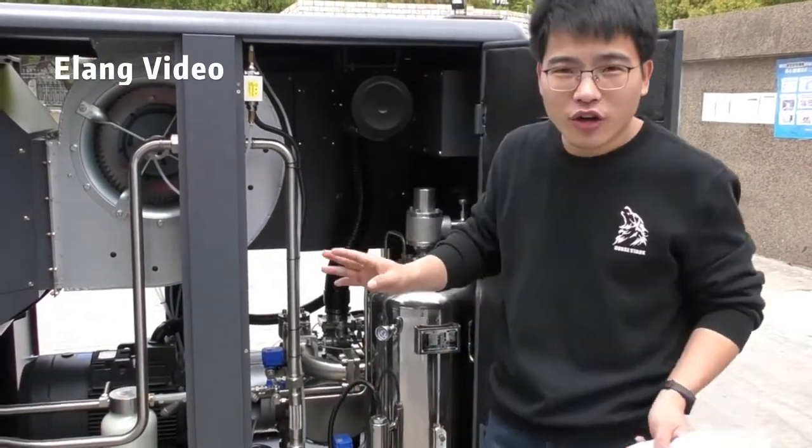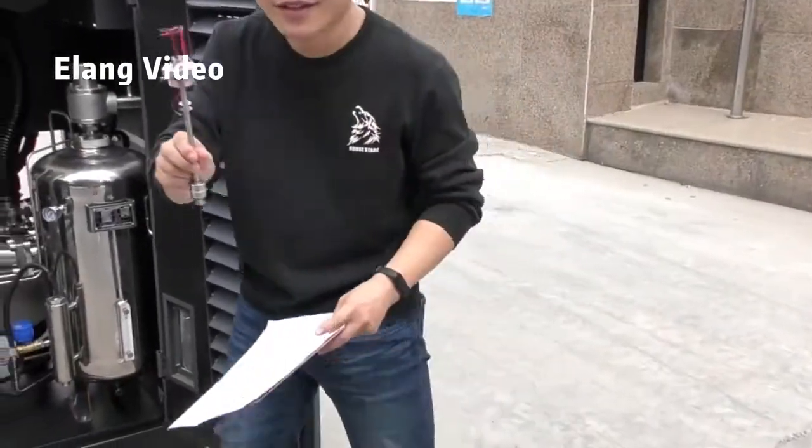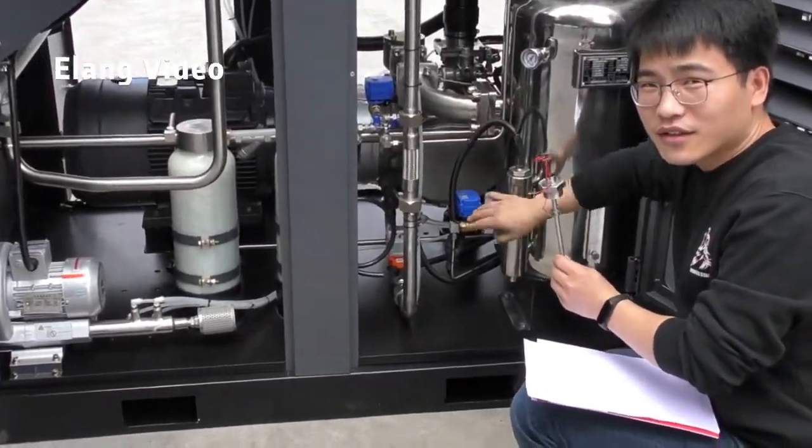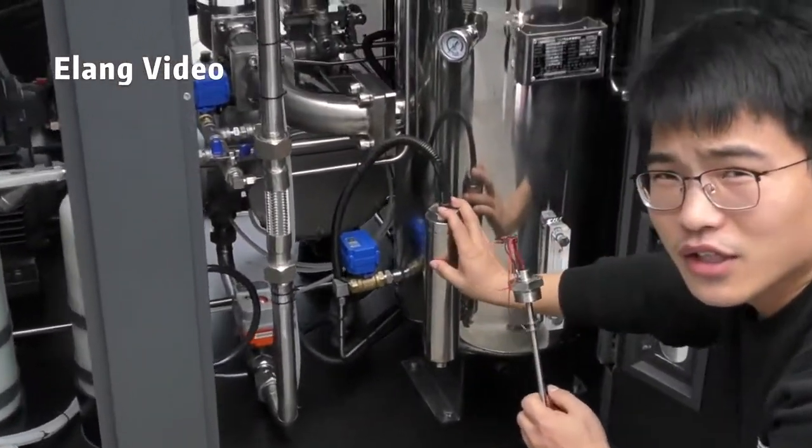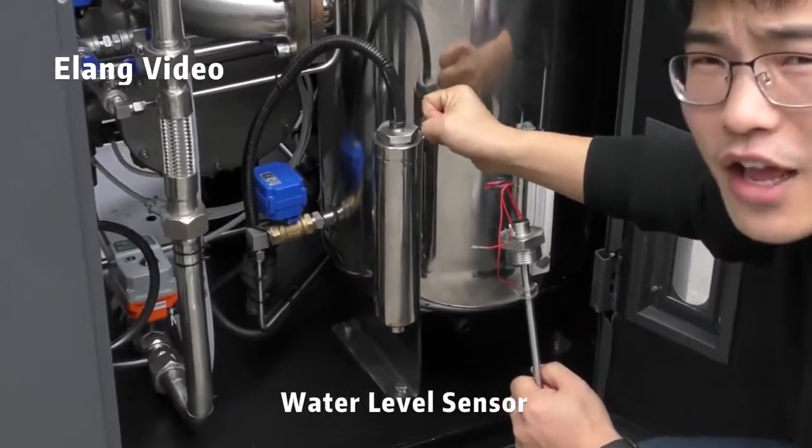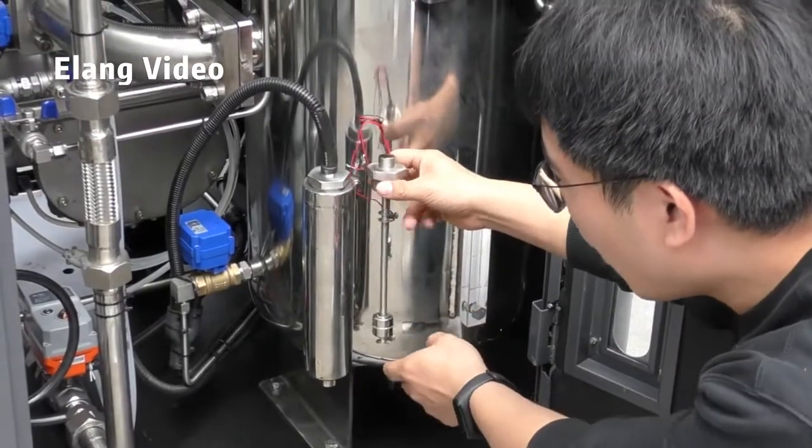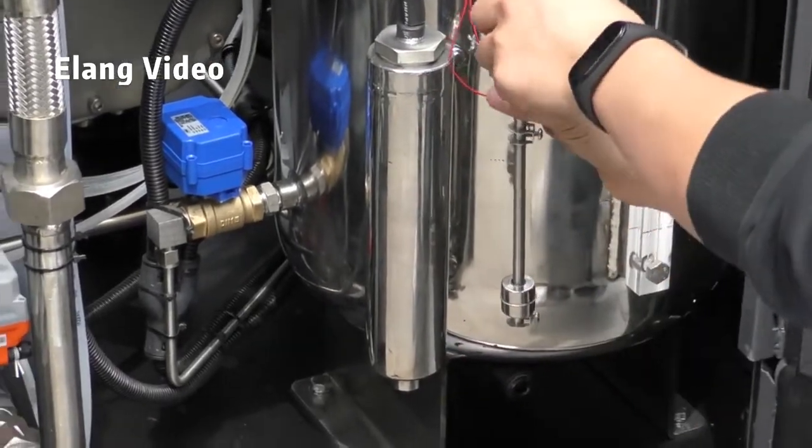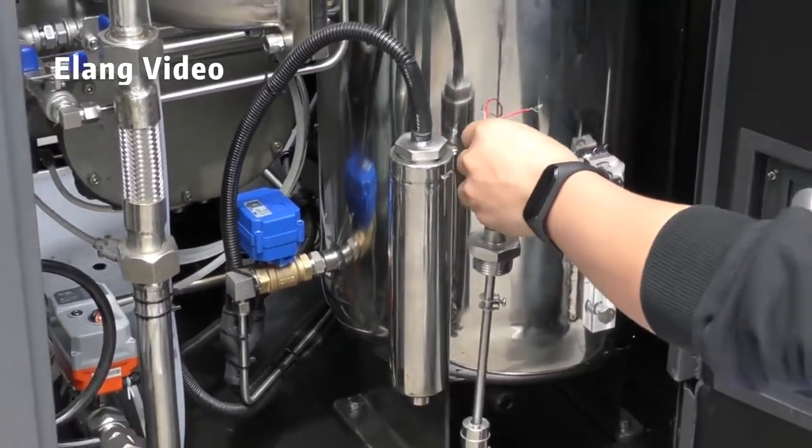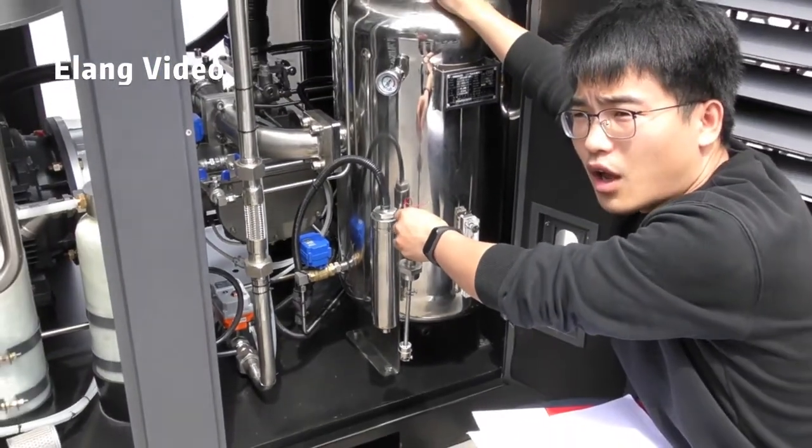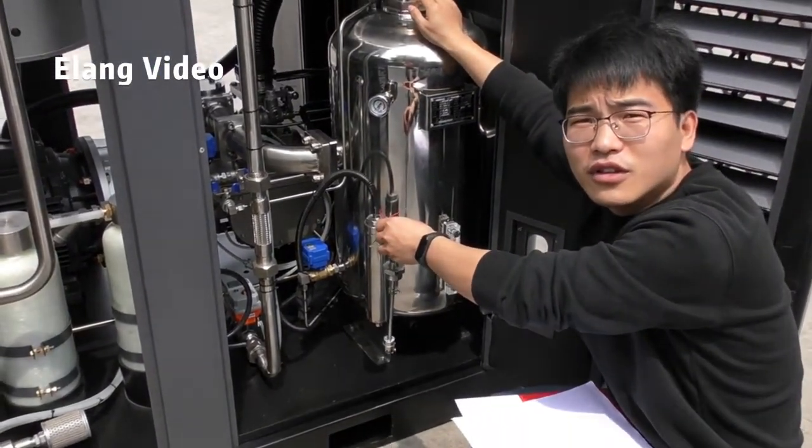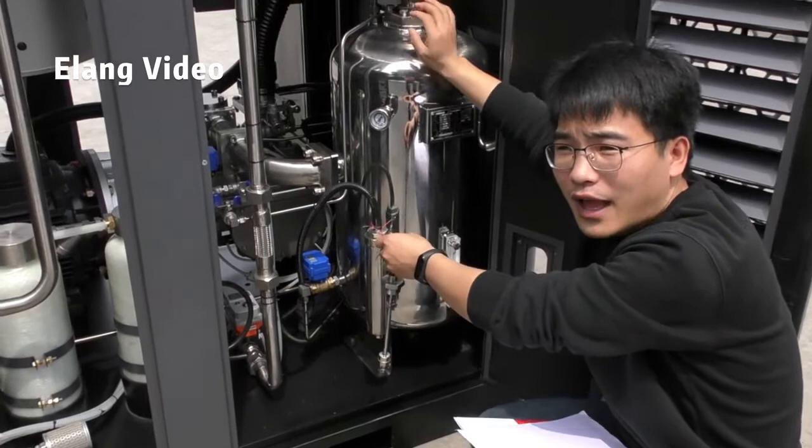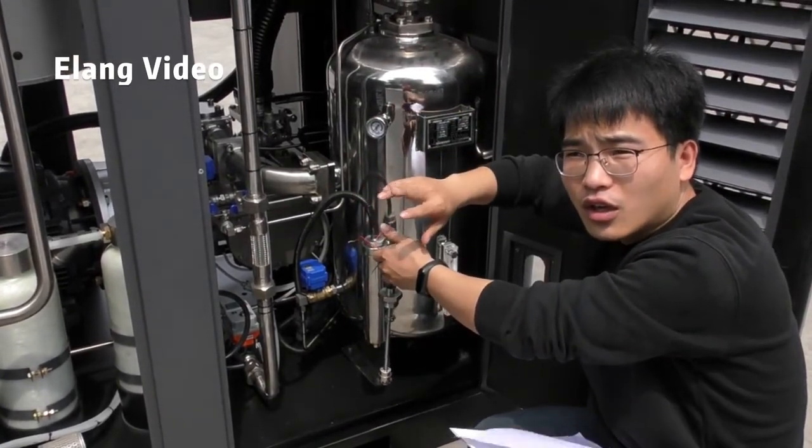Let me show you some other parts. This one here is the water level sensor. You can see how it works. When our air compressor needs to, it will automatically add water and discharge water.